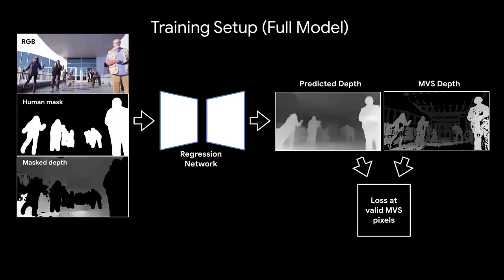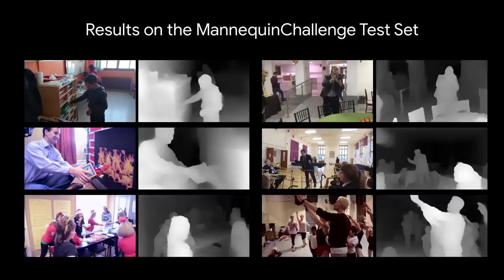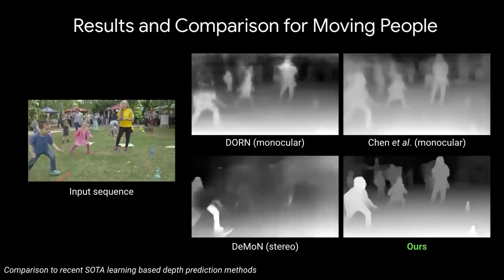Intuitively, the network learns to in-paint and refine the masked depth using the information from the RGB image. Our method successfully predicts depth for a large range of environments, poses, and lighting conditions in the Mannequin Challenge dataset.